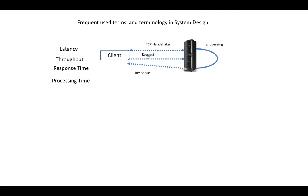Let's say this is my first request sent to the server from the client. The time it takes for the request to go from the client and be received at the server is T1. Then T2 is the time taken by the server for processing the request. And T3 is the time taken by the response sent by the server to reach back to the client.